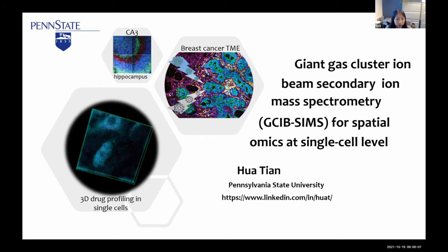Today I would like to present a new development of gas cluster ion beam secondary ion mass spectrometry, short as GCIB-SIMS, with a cryogenic workflow for spatial omics in single cells. This is not an all-in-one solution for all the challenges, but a good start to spatially image these small molecules in cells at their near-native state. I will briefly go through the technique development and showcase some applications in cancer cells and tissue with computational development for data processing.